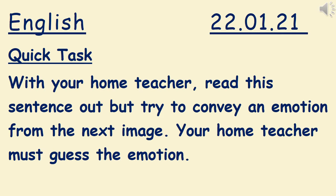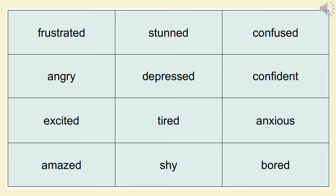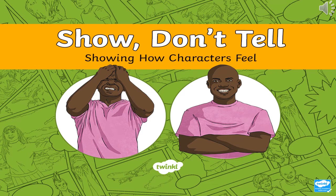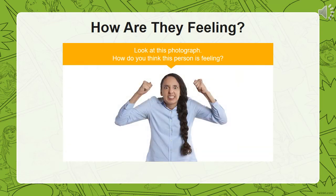Here's a quick task: with your home teacher, read a sentence out but try to convey an emotion from the next image — your home teacher must guess the emotion. Here are the emotions — pick one and read the next sentence trying to convey that emotion to your home teacher. You can try this three or four times using different emotions.